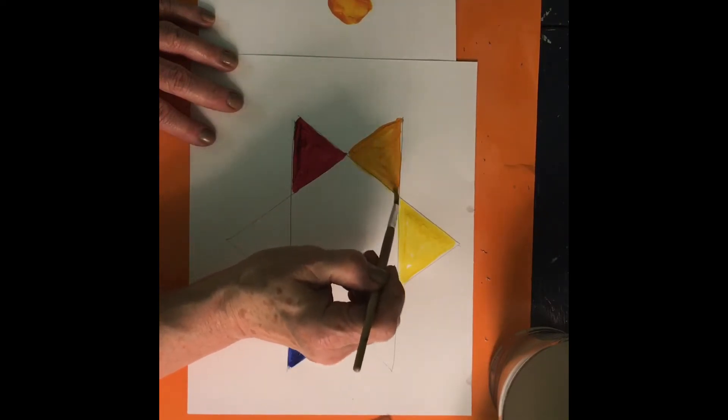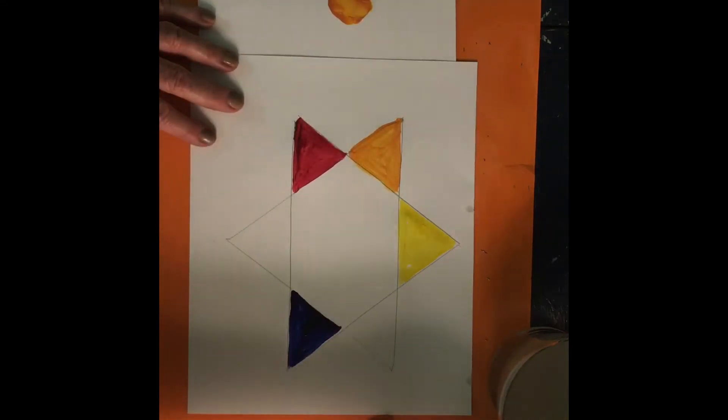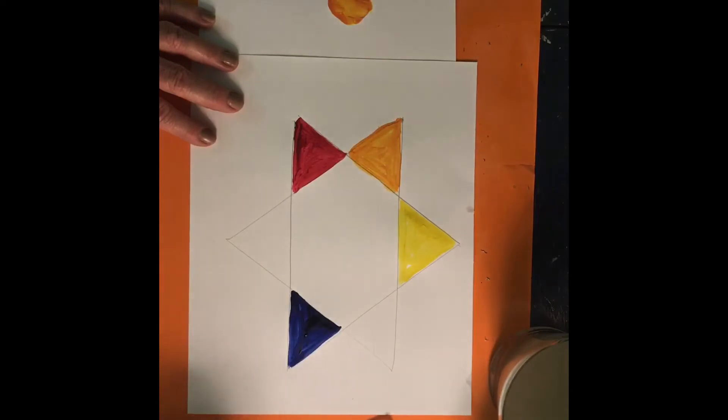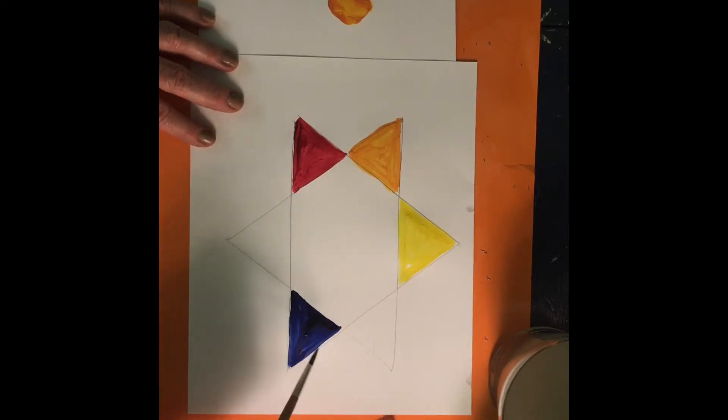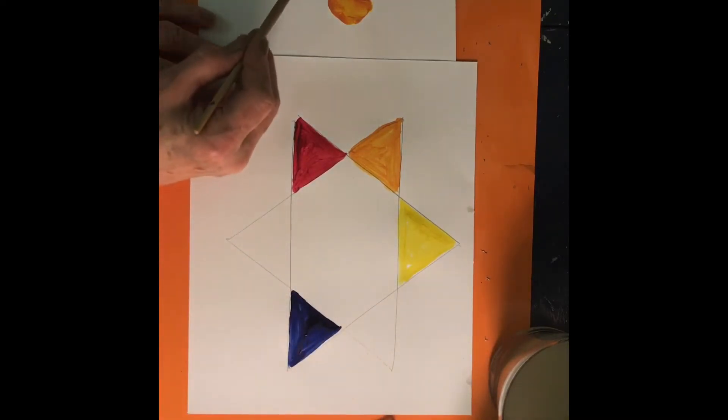Moving around my color star, or color wheel, I'm going to be mixing yellow and blue, and it is going to be making green.